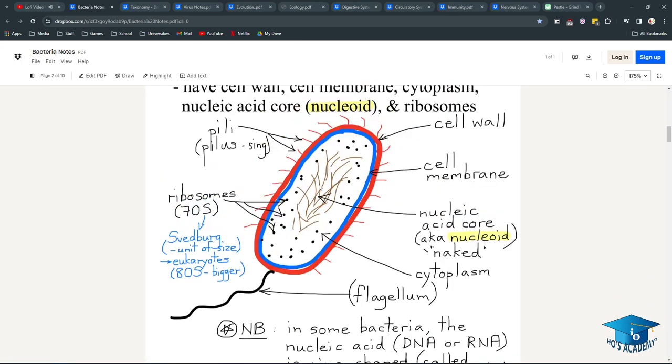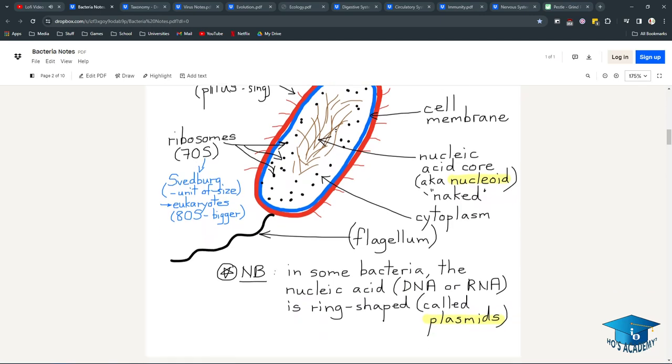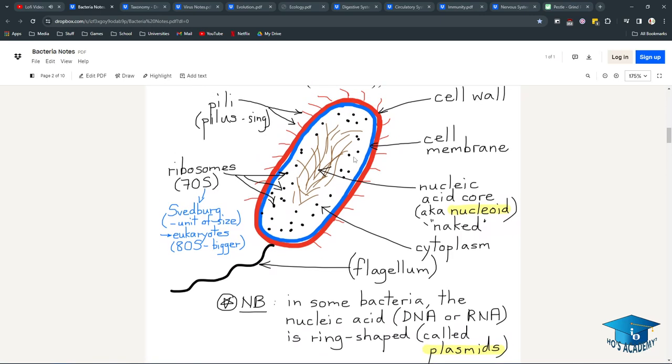Pili are involved in conjugation, the sexual reproduction of bacteria, which we'll come to later. They have 70S ribosomes as opposed to 80S ribosomes in eukaryotes. What's really important is that IB wants you to know the S stands for Svedberg units of size: 70S in prokaryote ribosomes because they're smaller, 80S in eukaryotes.